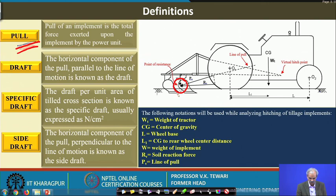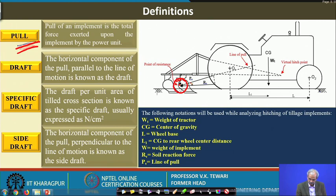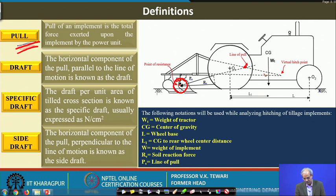This is the point where we talk about the center of resistance or the point of resistance. At this point, three forces can be seen: W, which is the weight of the implement; Px, the force along the line of pull; and Rx, the soil reaction forces. These are concentrated at this particular point. When we add this point and the point of hitch, in case of a three-point linkage the hitch point is slightly different and it keeps on varying.